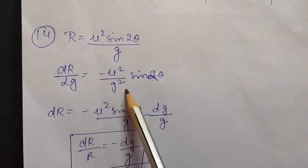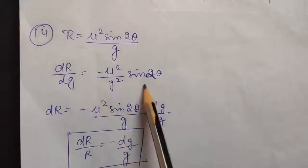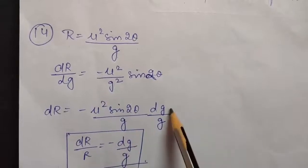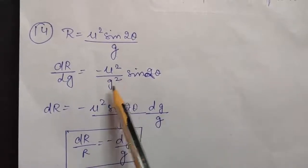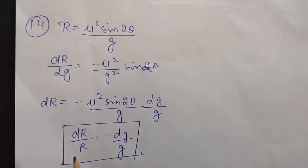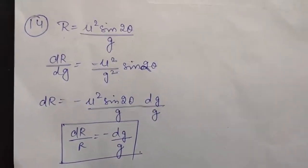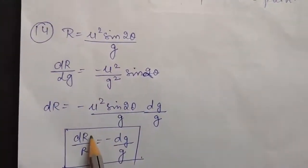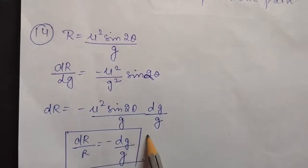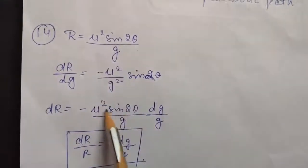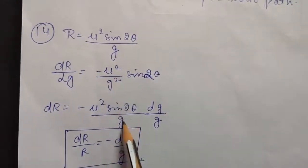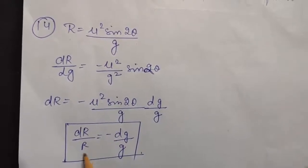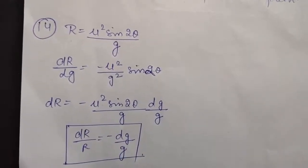So dR = −u² sin 2θ / g² · dg. Writing g² as g·g, from here dR = −(u² sin 2θ / g) · (dg/g). Dividing both sides by R, where R = u² sin 2θ / g, those terms cancel out, and you are left with dR/R = −dg/g. This is the relation between the changes in horizontal range due to the change in acceleration due to gravity.